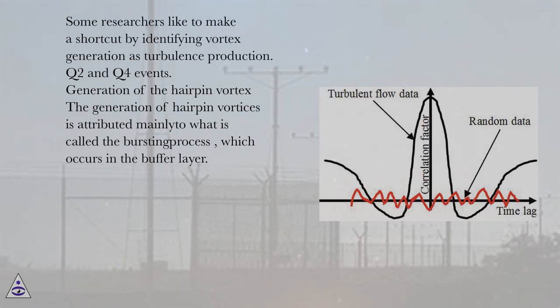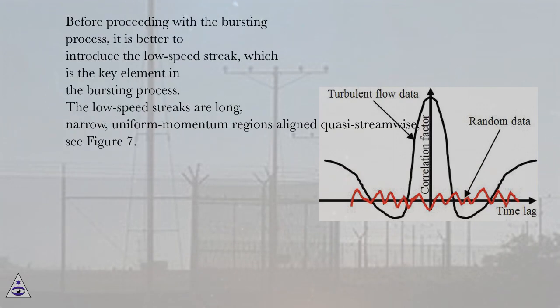Q2 and Q4 events. Generation of the hairpin vortex. The generation of hairpin vortices is attributed mainly to what is called the bursting process, which occurs in the buffer layer. Before proceeding with the bursting process, it is better to introduce the low-speed streak, which is the key element in the bursting process.